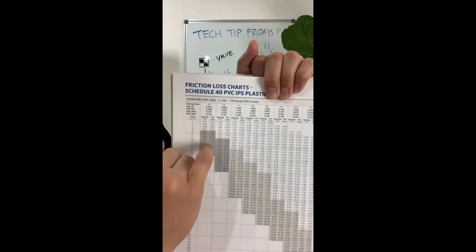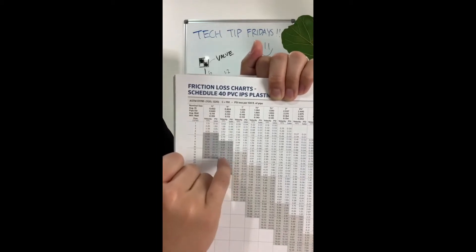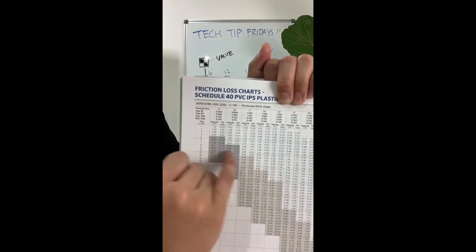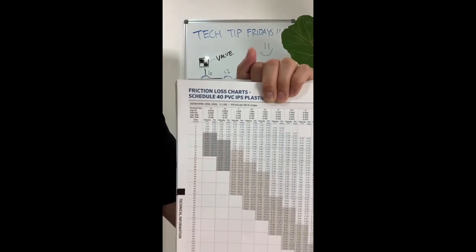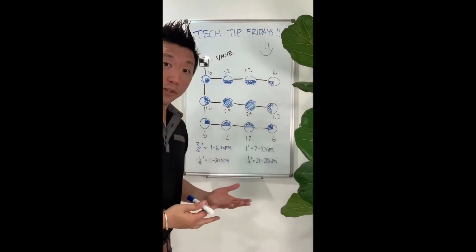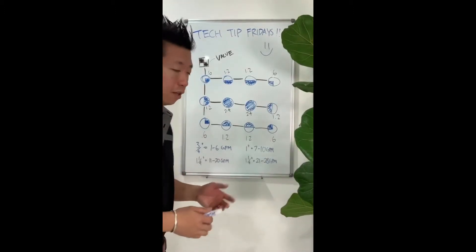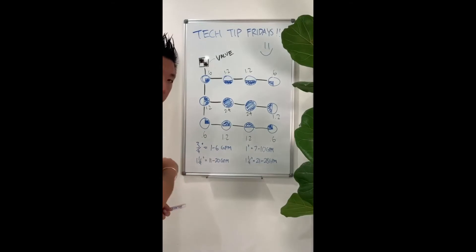So 3 quarter inch goes from 1 to 6, and then your 1 inch goes from 7 to 10, and so on and so forth. So now that we're experts at reading the chart, we're going to create a little cheat sheet on the board for reference as we're sizing our pipe.